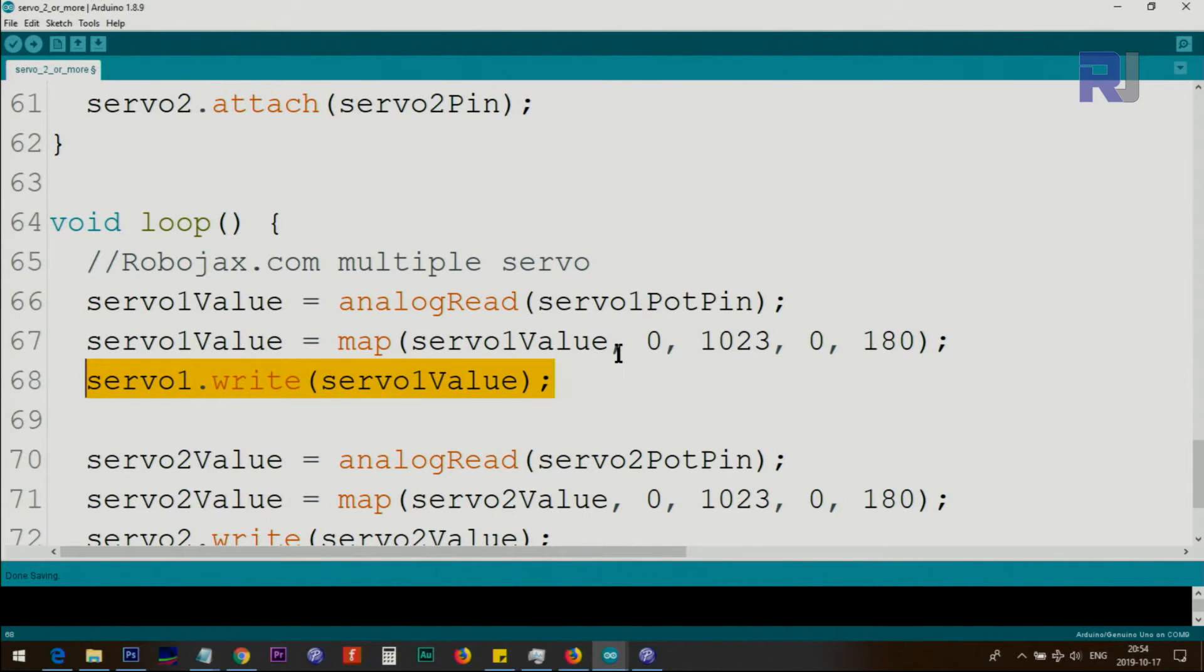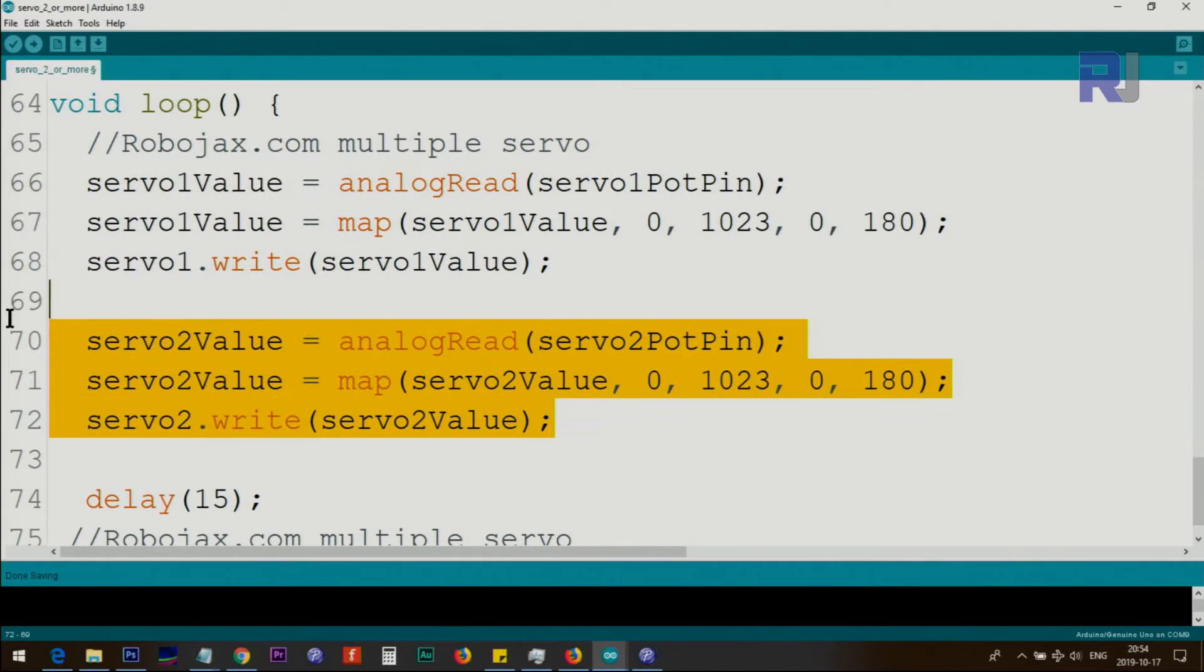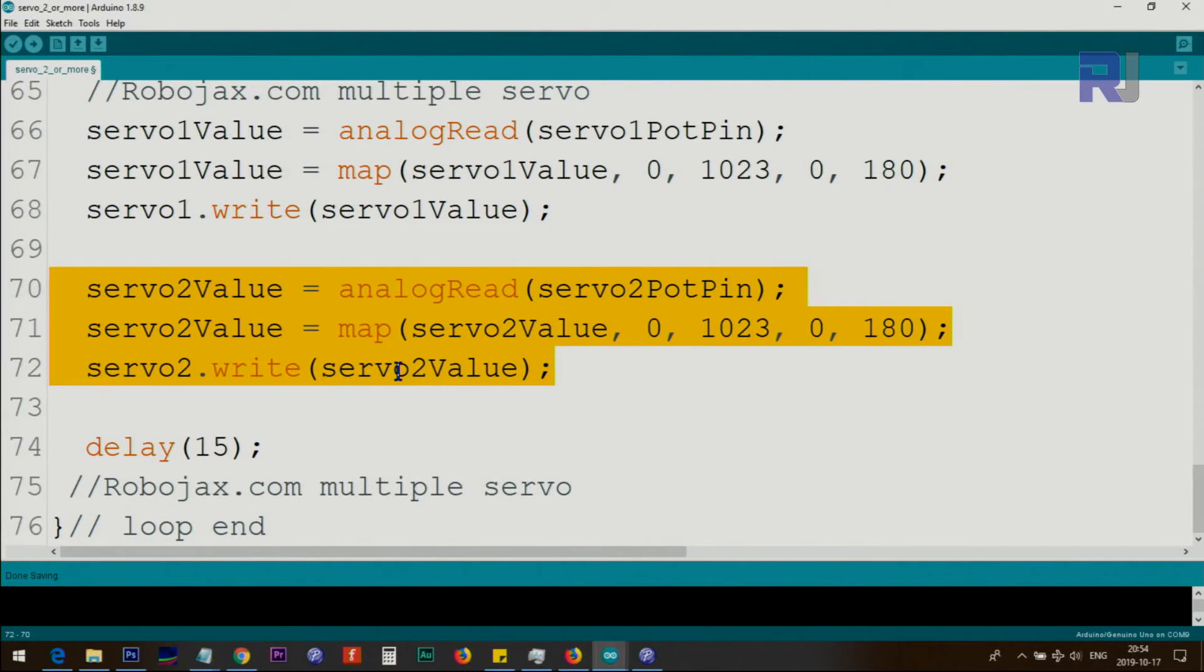The same code is copied here for servo 2. If you pay attention all the values are 2 and if you have 3 just copy and paste it and make one more line here for three. This 15 millisecond is the time that allows the servo to move to a desired location. If it is too slow you can increase the speed by reducing this value or you can increase it to reduce the speed of movement of servo. The loop will continuously read the potentiometer and move the servo to the new location.